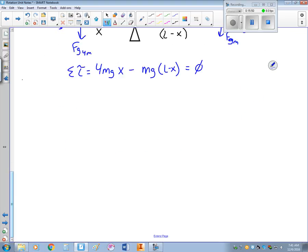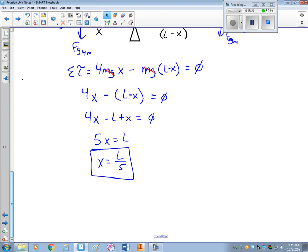Okay, now we just got to do a little bit of math. Notice that the mg's cancel, so I'm left with 4x minus L minus x equals zero. So that's just 4x minus L plus x equals zero, or 5x equals L, or x equals L over 5. So that would be probably closer to what you would find on the AP exam. Alright, that was quite a lot of math, so we're going to finish that video here.